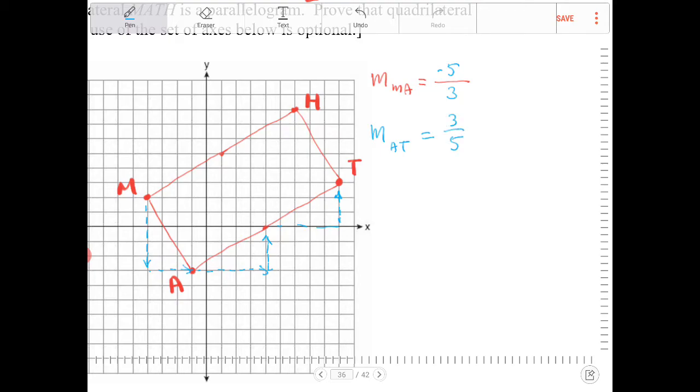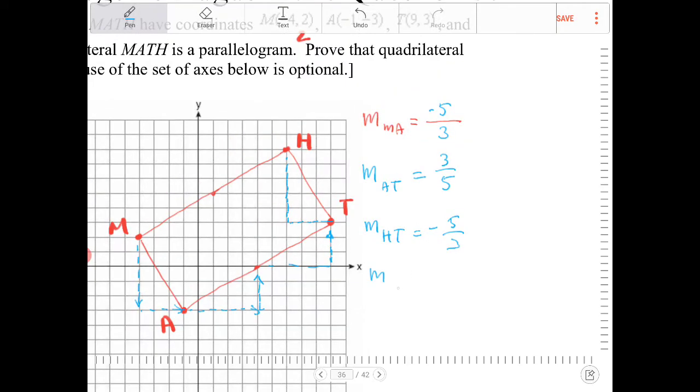I can already see now that adjacent sides have negative reciprocal slopes. Let's find the slope of HT. So again, we're going to go down five and over three. So it's negative five-thirds. And the slope of MH is going to be positive three-fifths.